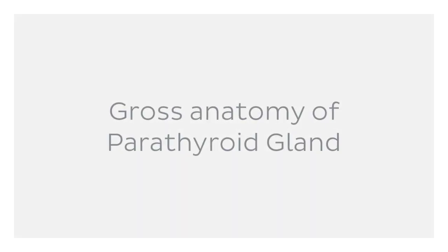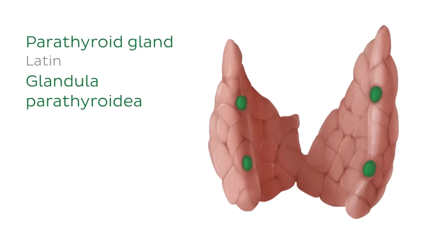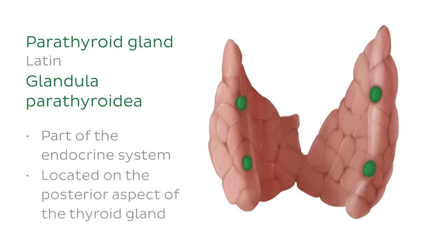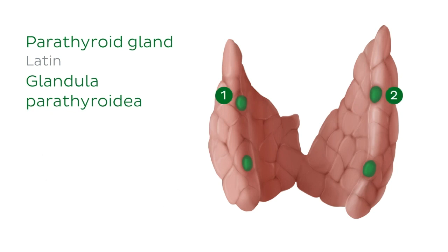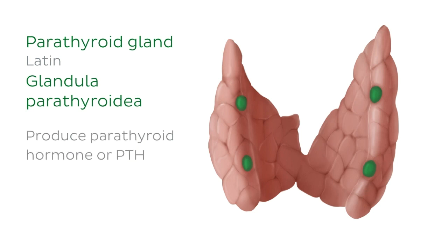First, a few quick facts about the gross anatomy of the parathyroid gland. The parathyroid glands are small ovoid structures which are part of the endocrine system and are found on the posterior aspect of the thyroid gland. There are usually four — two superior and two inferior glands, or two left and two right glands. Specific cells within this gland produce a hormone conveniently known as parathyroid hormone, or PTH.